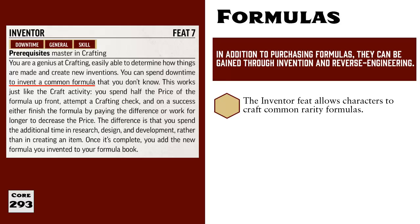Also, crafting the formula works just like crafting anything else. You pay half the cost upfront for that formula, and then spend 4 days working, and then you make a crafting skill check. If successful, you can either pay the balance, or spend another day of downtime working. When the balance is reduced to zero, then you have a new formula.